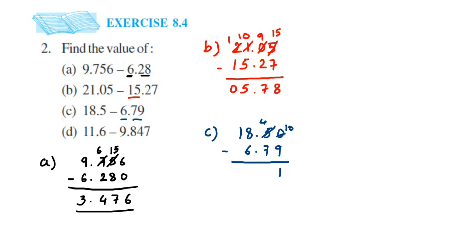4 minus 7 — we cannot do it, so take a borrow from 8; 8 becomes 7 and 4 becomes 14. 14 minus 7 is 7. Place the decimal point. 7 minus 6 is 1. There's no number here, so place a 0 or leave it. 1 minus 0 is 1. So the answer is 11.71.